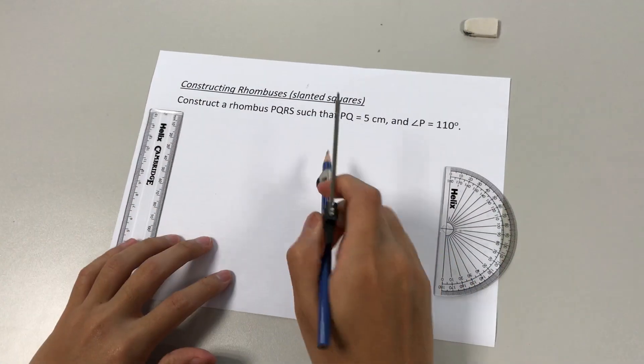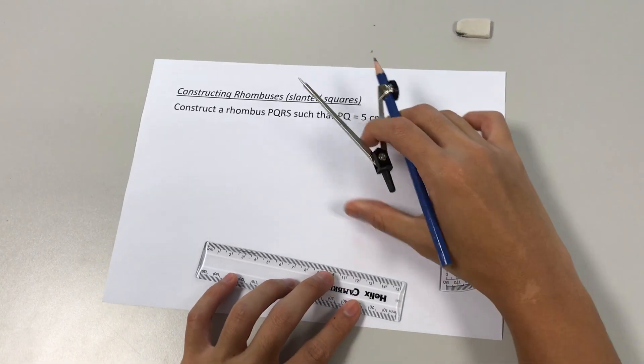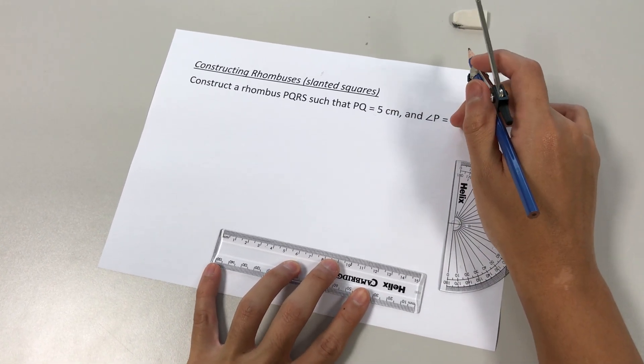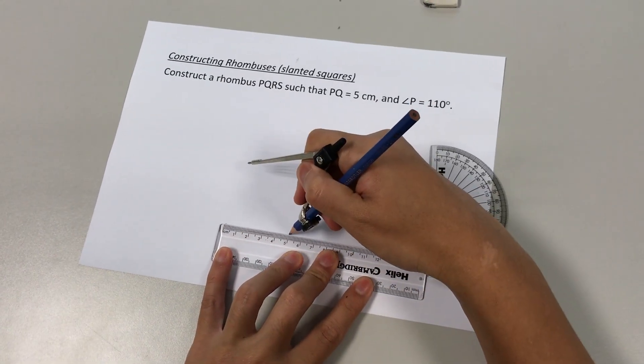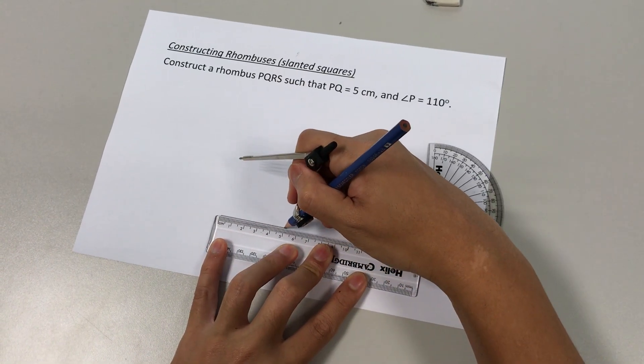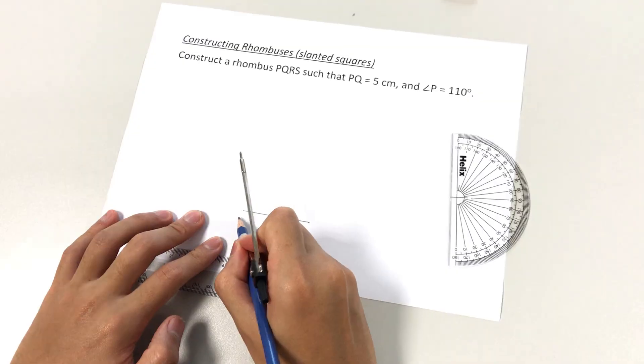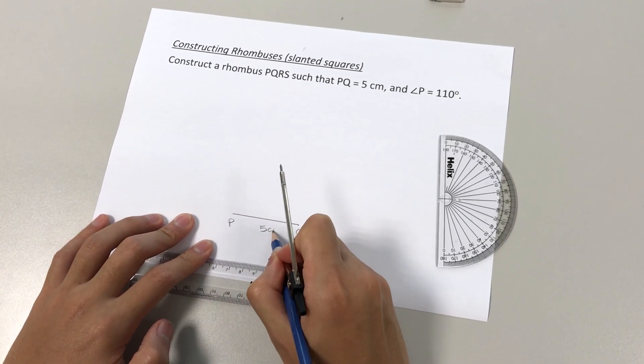First, let's construct line PQ, a 5cm line. We shall mark out 0 to 5. Okay, once we've done that, we shall label it PQ 5cm.